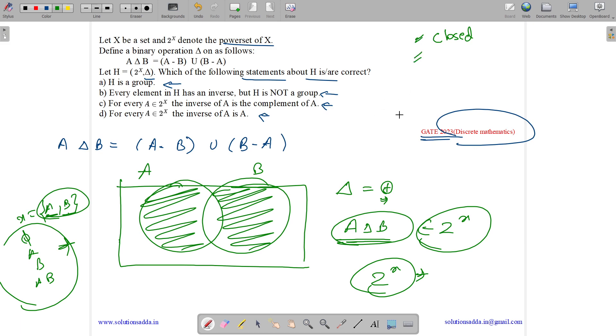Now let us see associativity property. We know this XOR operation is associative. A XOR B XOR C is equal to A XOR B XOR C. So we can easily see that it is associative as well.